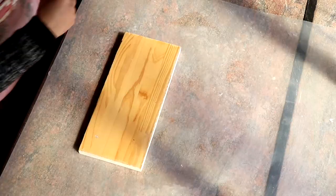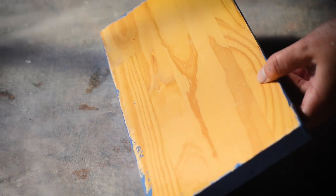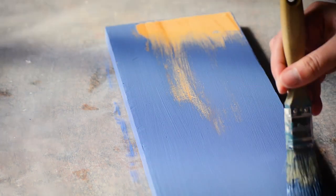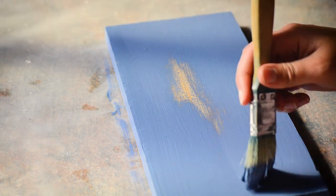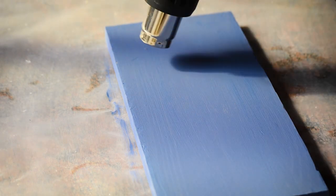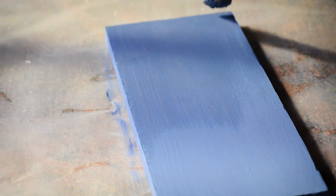Next project, a tie hanger. I found an old piece of plank and painted it with blue thunder chalk paint. You can leave this to dry or speed up the process by drying it with a hair dryer or heat gun. Paint a second layer and dry it again.